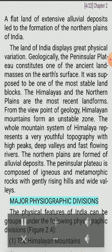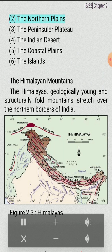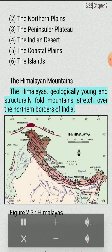The major physiographic divisions of India are: 1. The Himalayan mountains, 2. The northern plains, 3. The peninsular plateau, 4. The Indian desert, 5. The coastal plains, and 6. The islands. The Himalayas are geologically young and structurally fold mountains that stretch over the northern borders of India.